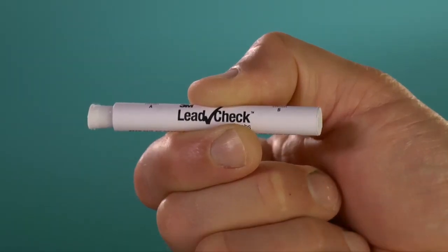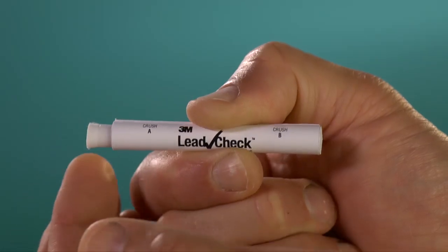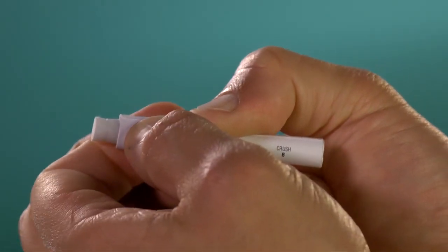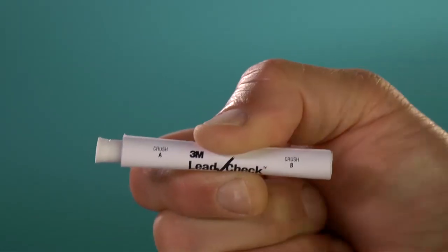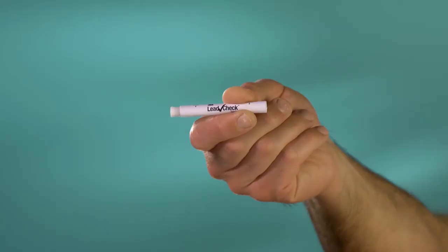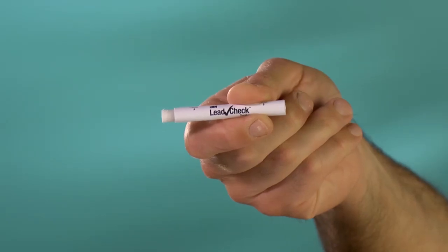Now, activate the 3M Lead Check swab by firmly squeezing each end at the points marked A and B on the cardboard cover until you can feel and hear the ampules inside being crushed. Shake the tube vigorously for a few moments to be sure that the chemicals inside have mixed. The 3M Lead Check swab is now activated and ready for use.